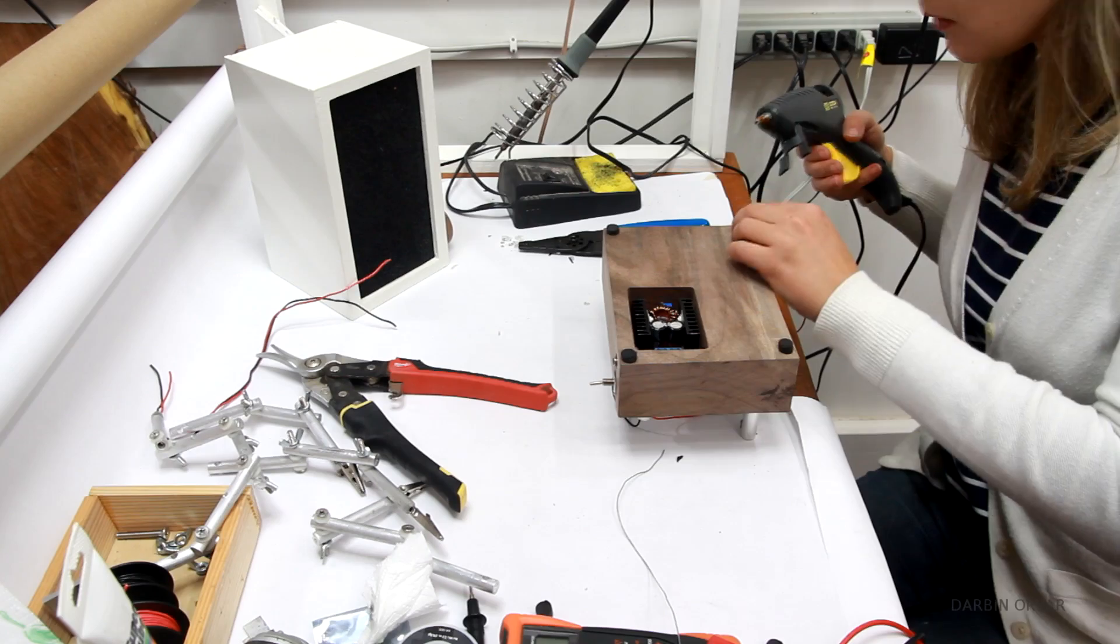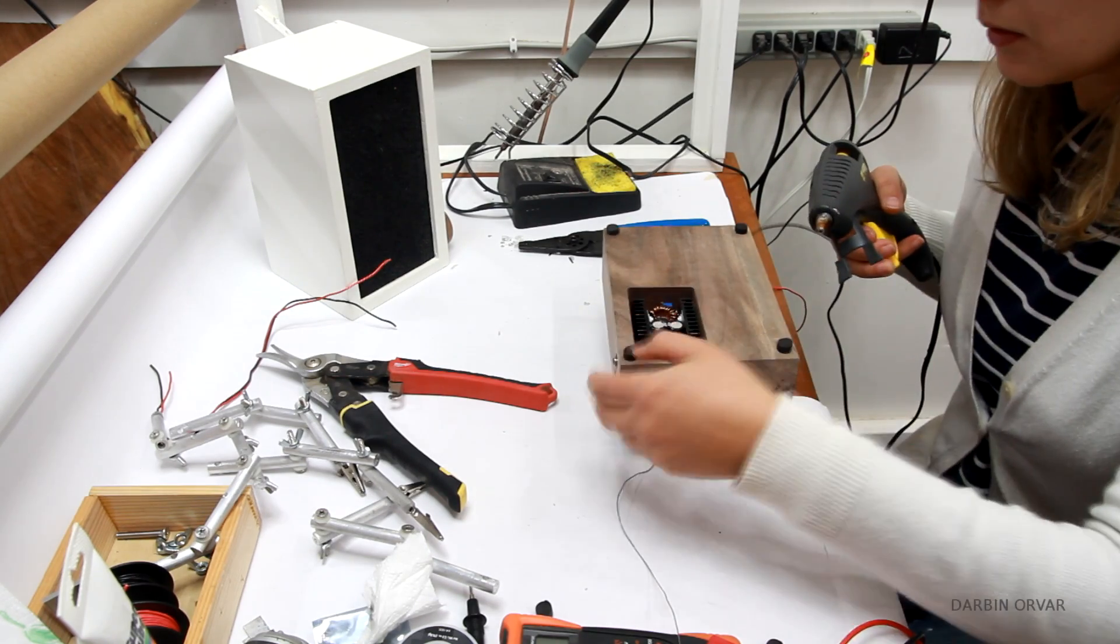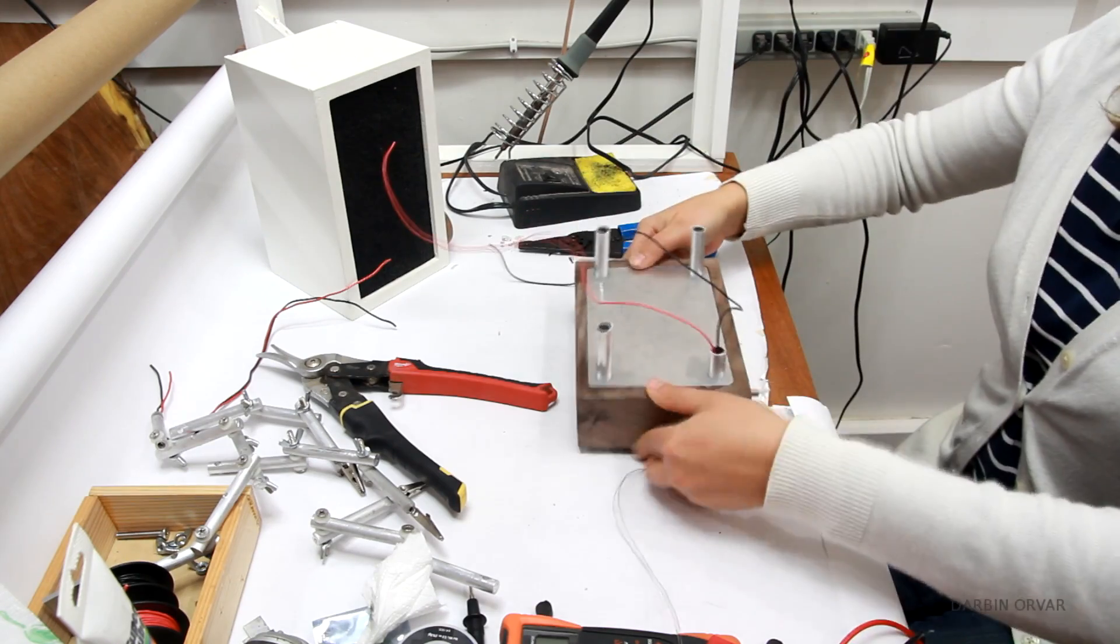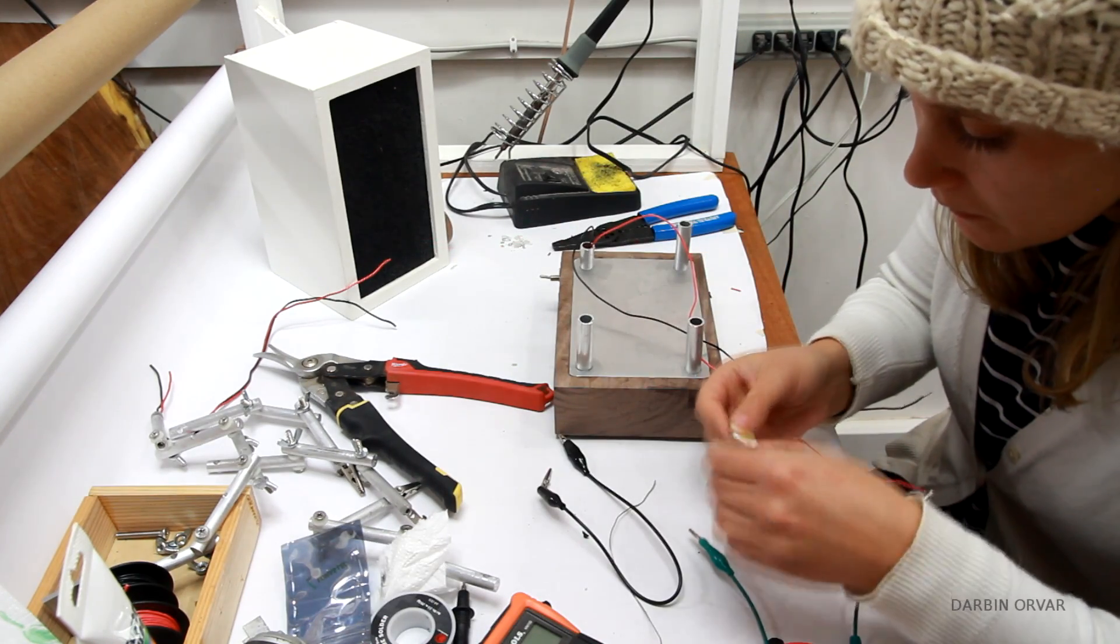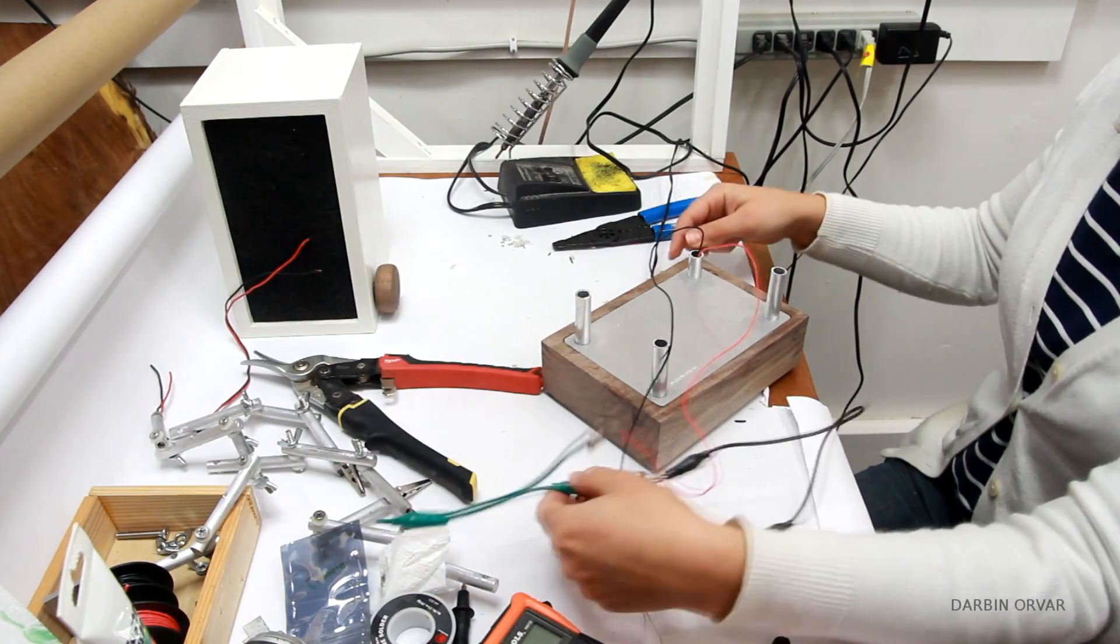To get the whole unit off the ground I'm cutting off some pieces of rubber here to make the little feet and hot gluing those on as well. So the wires are coming up through one of the hollow tubes. So I'm just going to test the light here. And it works.